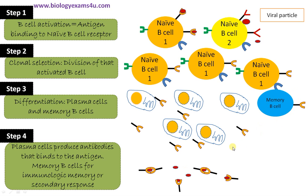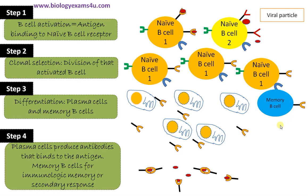Regarding the role of memory B cells: memory B cells are responsible for immunologic memory, or the secondary response, which is a typical characteristic of adaptive immune response. If the same pathogen attacks the person for a second time, the memory B cell will recognize the pathogen easily and mount a quick immune response, eliminating the pathogen at the earliest.